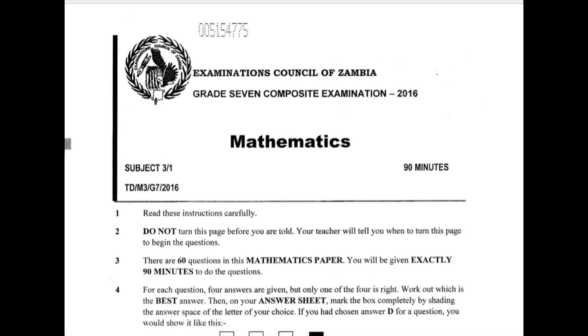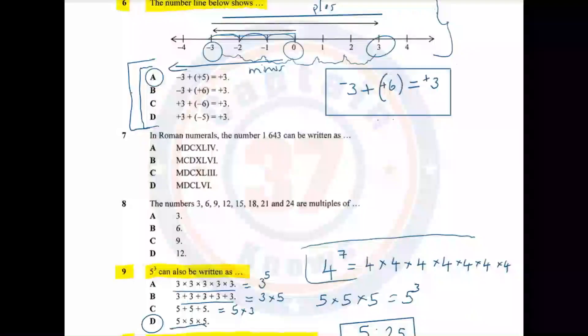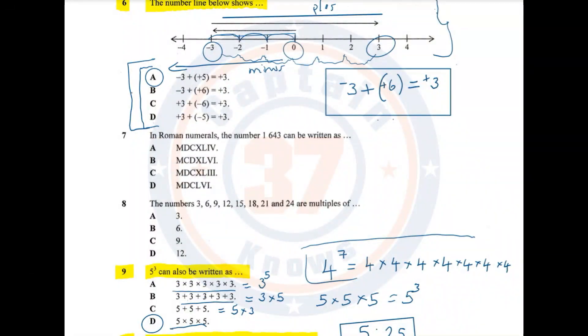My name is Captain37 and in this presentation I'm going to take you through this paper. Question number 7. In Roman numerals, the number 1643 can be written as? We've been given options A, B, C, and D.